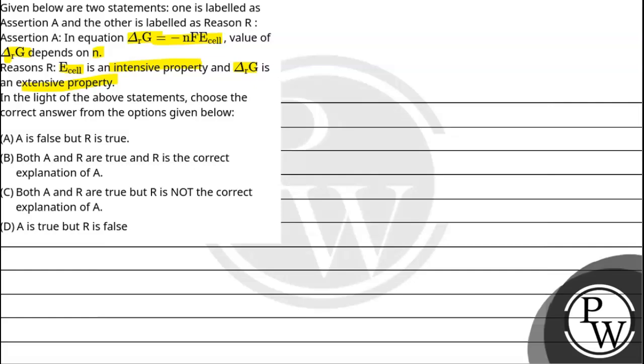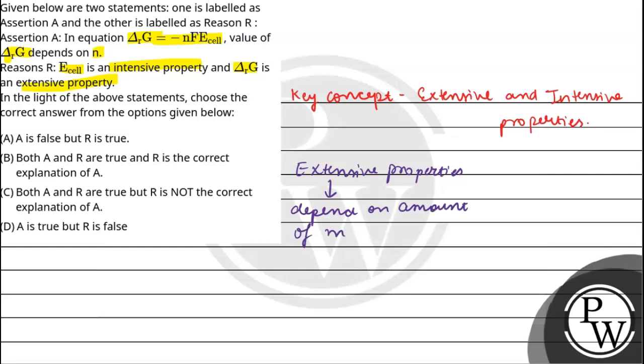First of all, we have to identify the key concepts. The key concepts are extensive and intensive properties. So extensive properties depend on amount of matter.